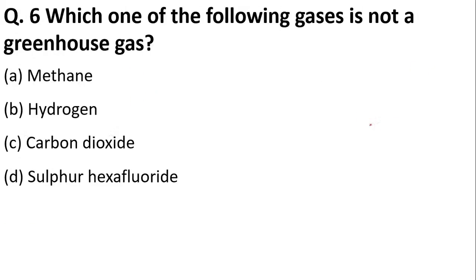Which of the following is not a greenhouse gas — methane, hydrogen, carbon dioxide, or sulfur hexafluoride? The correct answer is option B, hydrogen. Hydrogen is a colorless, odorless, tasteless, and non-toxic gas, and it is not a greenhouse gas.